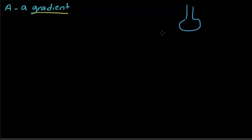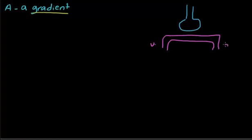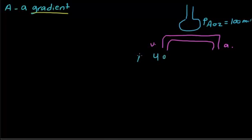This is the pulmonary capillary. In the pulmonary capillary there is usually a venous system on one side and an arterial system on the other. The partial pressure of O2 at the alveoli during expiration is around 100 mmHg, and in the venous system it is around 40 mmHg.